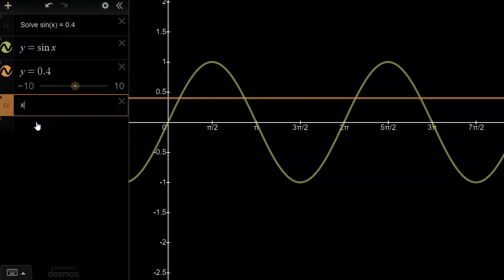We would say x is equal to 0.412 plus multiples of 2π, so we would go 2nπ.